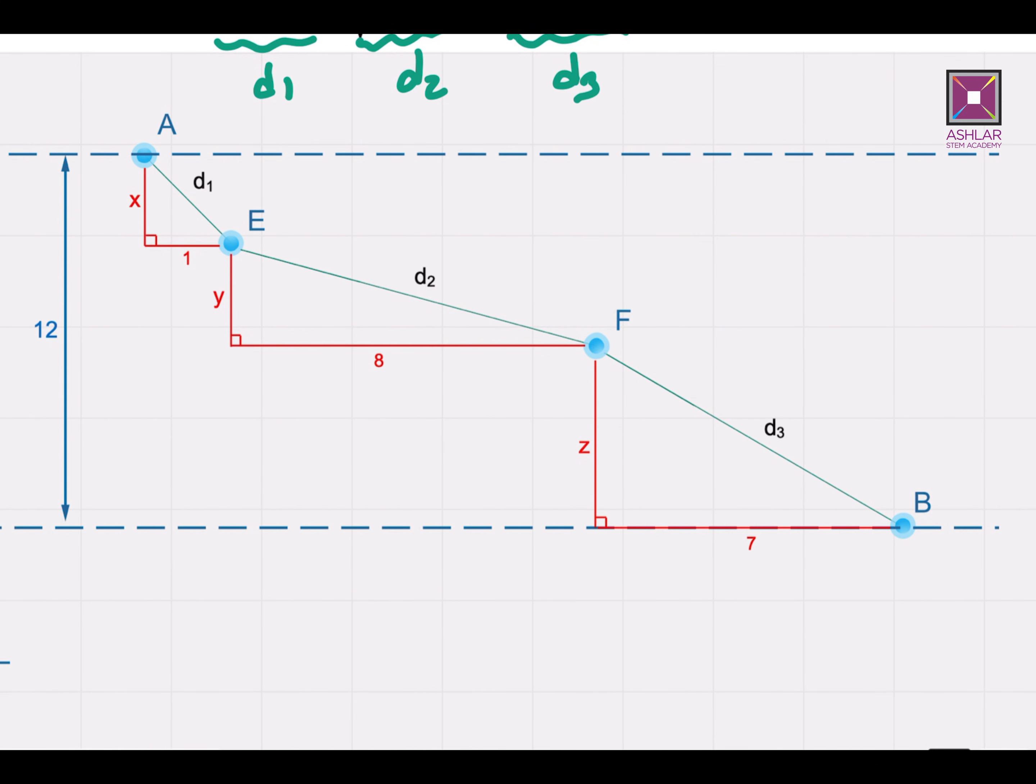And the horizontal displacement would always be equal to 16, which is 1 plus 8 plus 7. So this distance will be 16 units, and the vertical is 12.